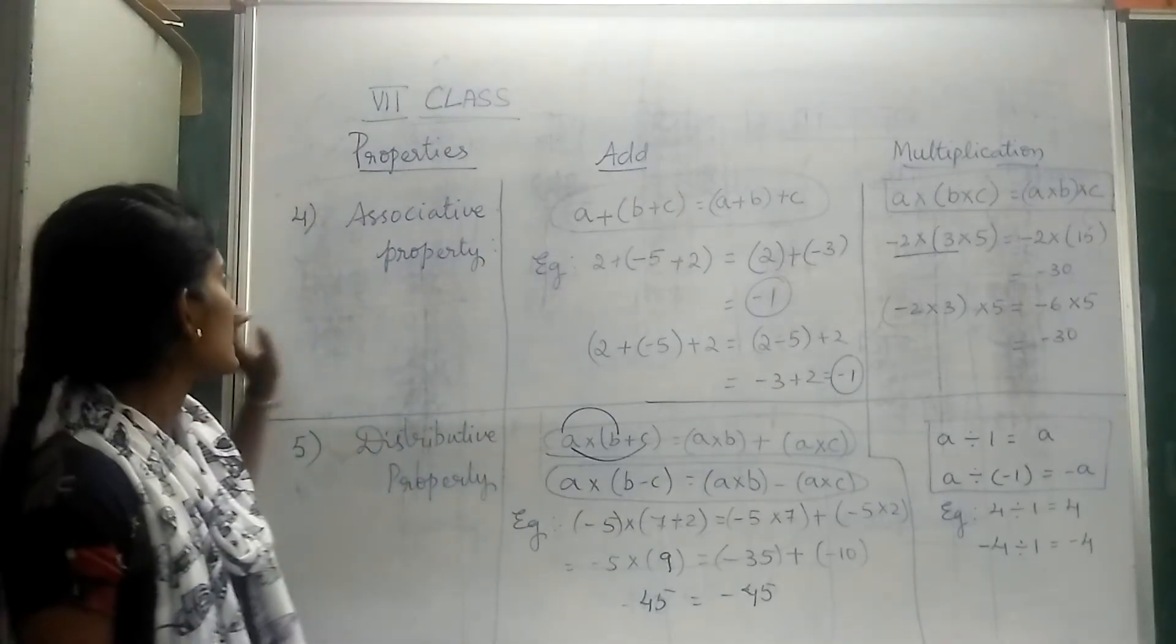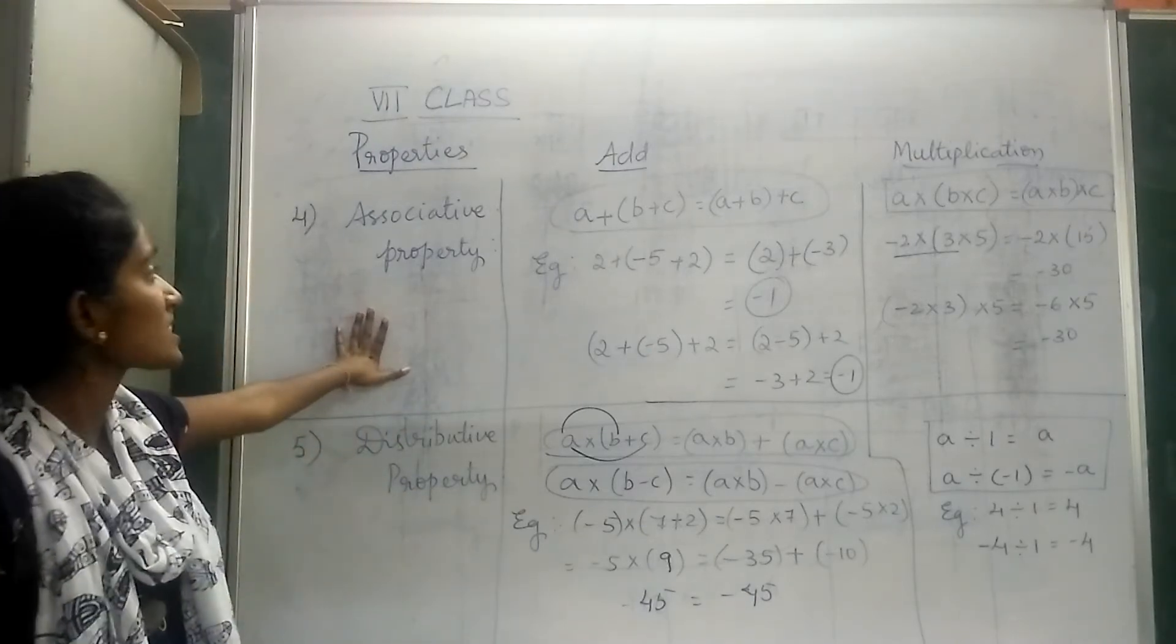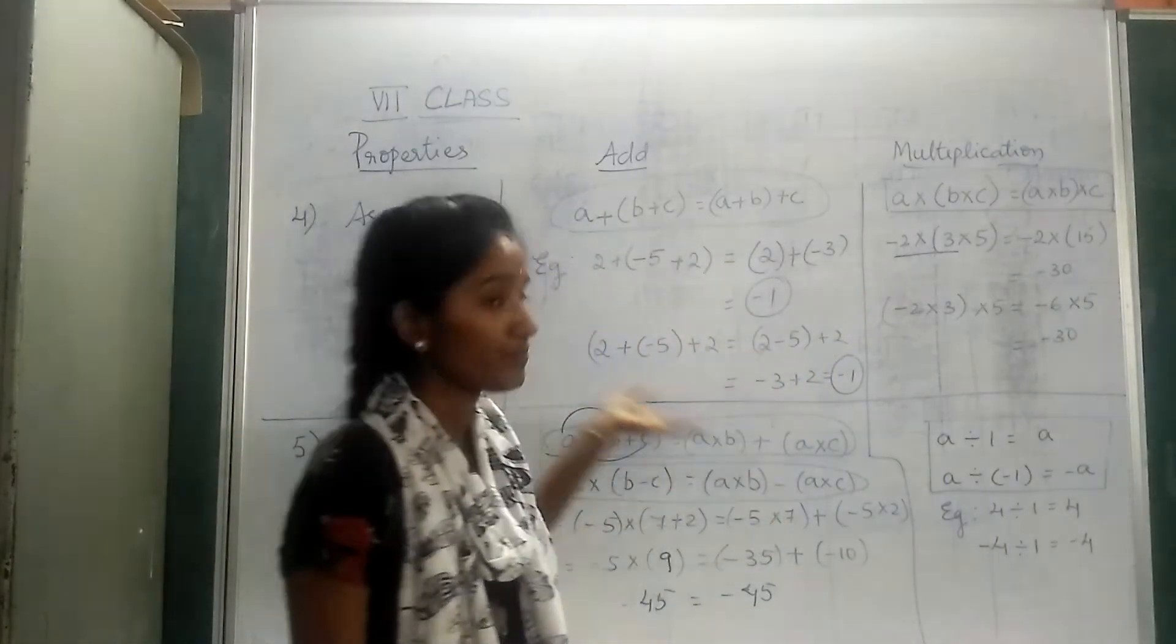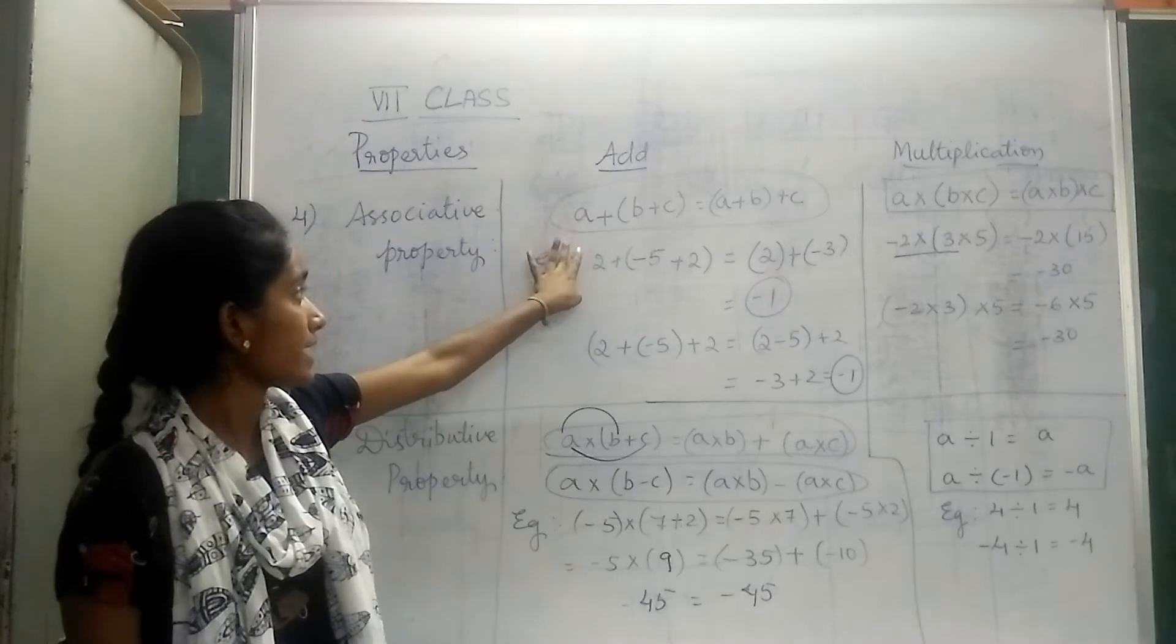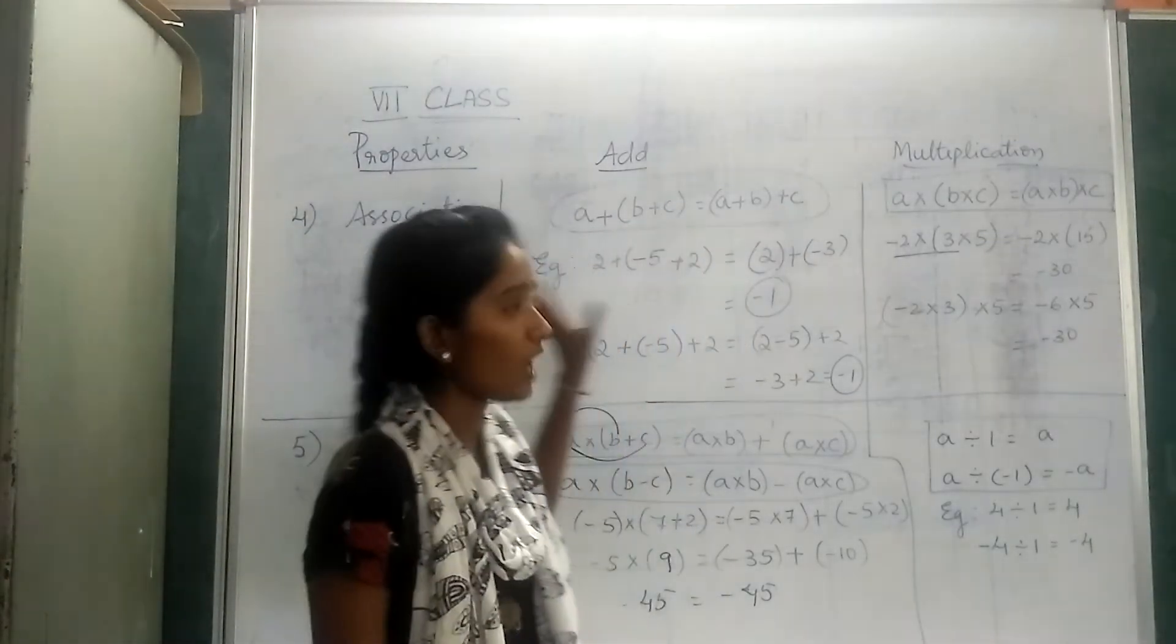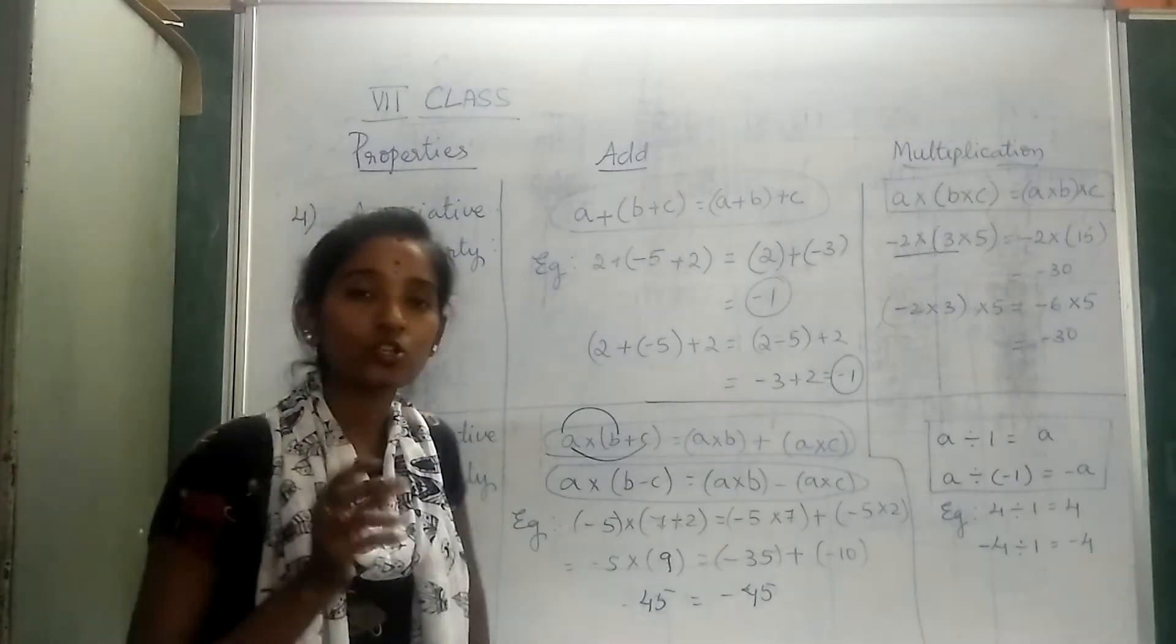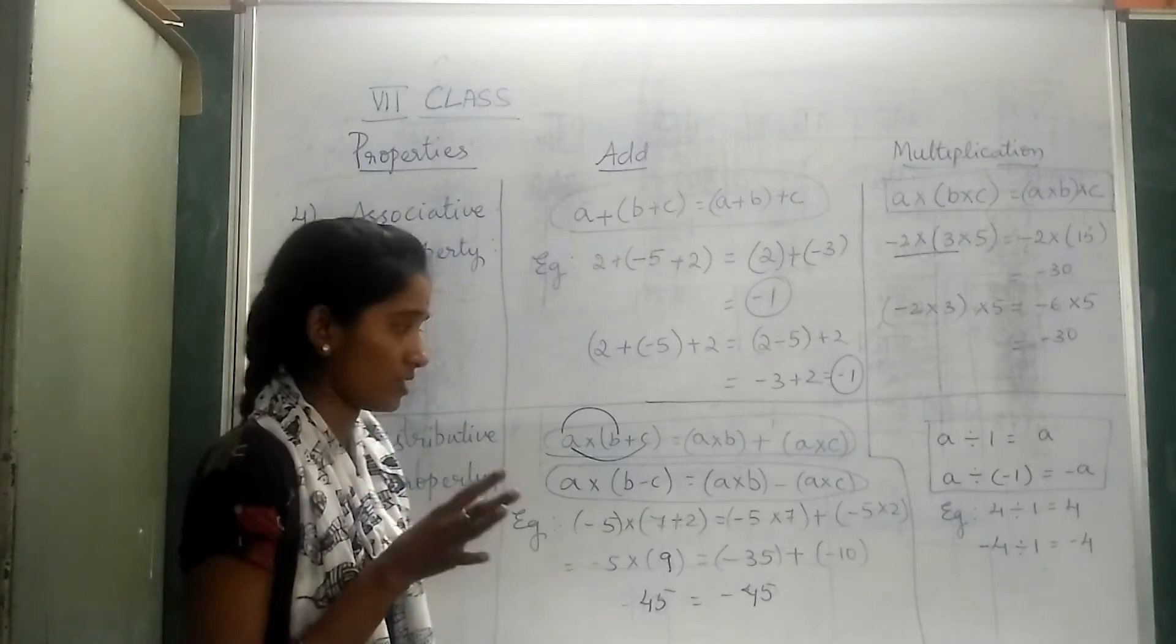Today we are going to learn about the associative and the distributive property. Associative property satisfies addition and multiplication both together. When it comes to addition, we will see that (a + b) + c is equal to a + (b + c). Either with positive integers or negative integers, the answer will be the same.